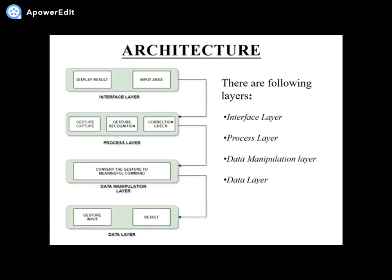Architecture. It has four layers: interface layer, process layer, data manipulation layer, and data layer. The interface layer displays result and input area. In the process layer, gesture is captured, then gesture is recognized, and then correction check is done. In the data manipulation layer, we convert the gesture to a meaningful command. In the data layer, it consists of gesture, input, and results.